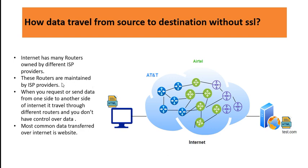These routers are maintained by their respective ISP providers — AT&T routers maintained by AT&T, Airtel routers maintained by Airtel. When you request or send data from one side of the internet to another, it travels through different routers. You don't have control over the data — it goes through AT&T, then Airtel, then maybe Jio, traveling through various routers to reach the web server.